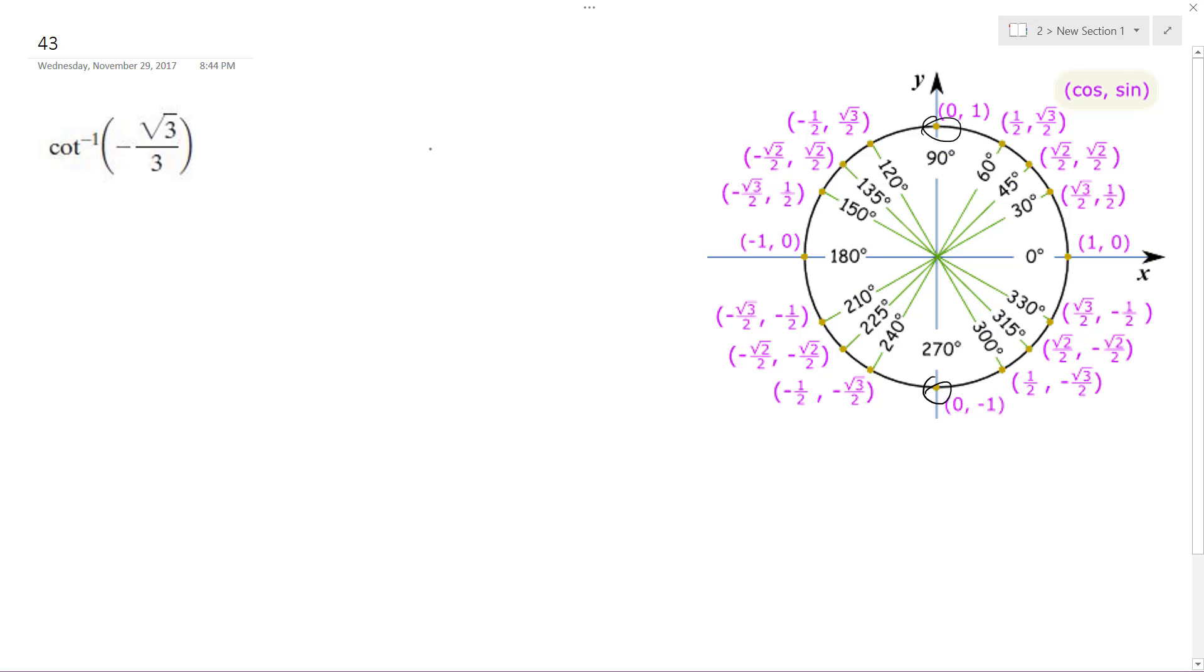So it's going to be equal to... So this is x, this is y. Since this is negative, it's going to be in quadrant 4.